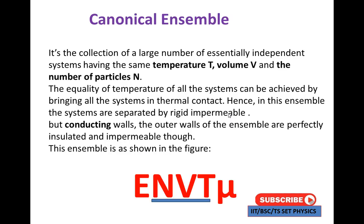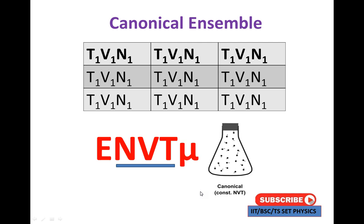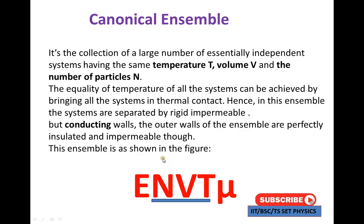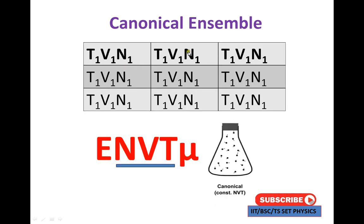Next is the canonical ensemble, where temperature, volume, and number of particles are constant — N, V, T. This uses conducting walls, through which energy is automatically transmitted, which is why the energy is variable. The system is divided into canonical subsystems: system 1, system 2, system 3.